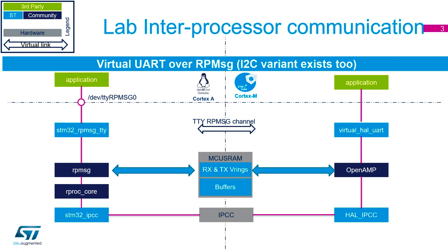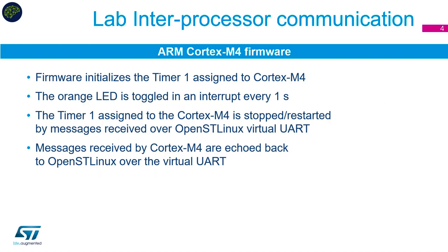On the M4 side, a separate application uses a virtual UART, which is part of the HAL drivers for Cortex-M devices, and a community block called OpenAMP. This either receives buffer data from RAM into the application or transfers data back toward the A7. A HAL IPCC driver controls all the flags and interrupt stages. There's also a version that runs I2C protocols instead of a virtual UART.